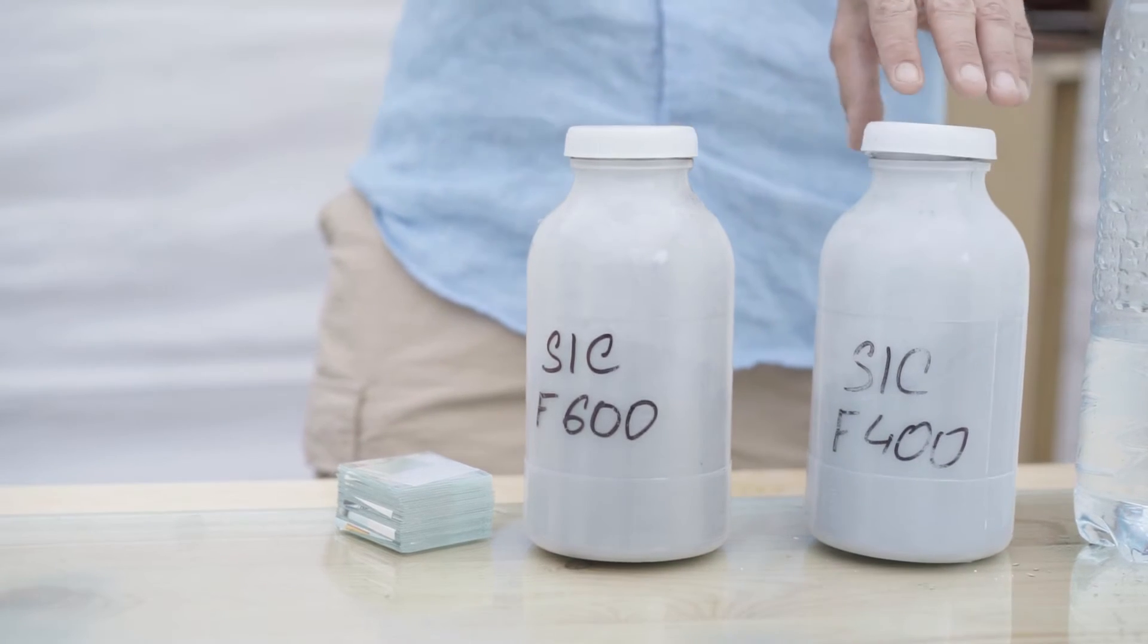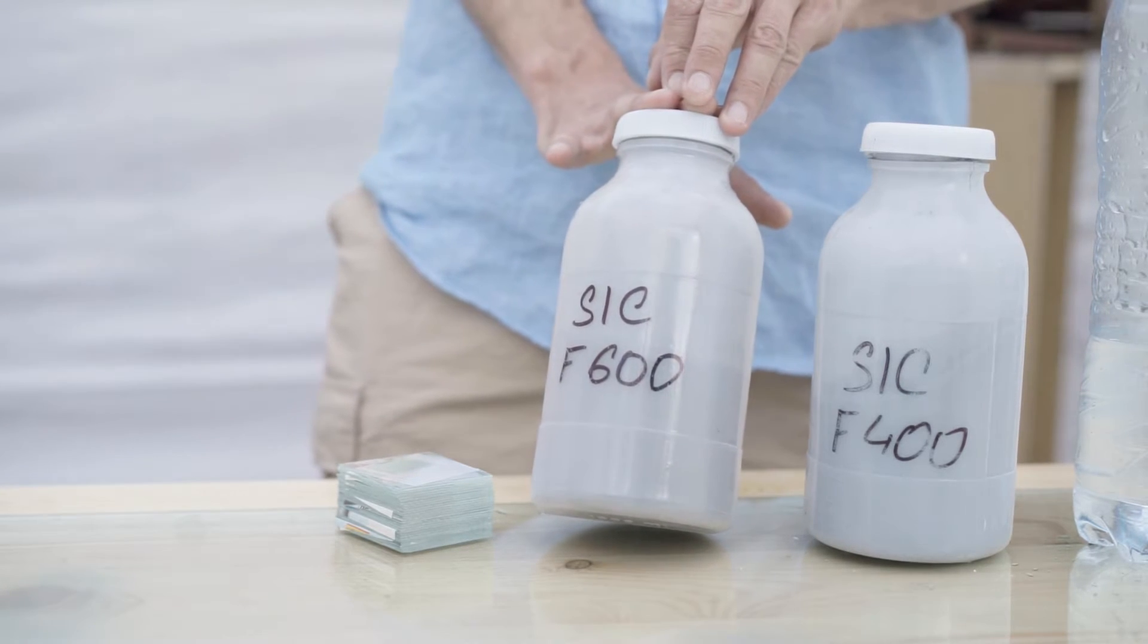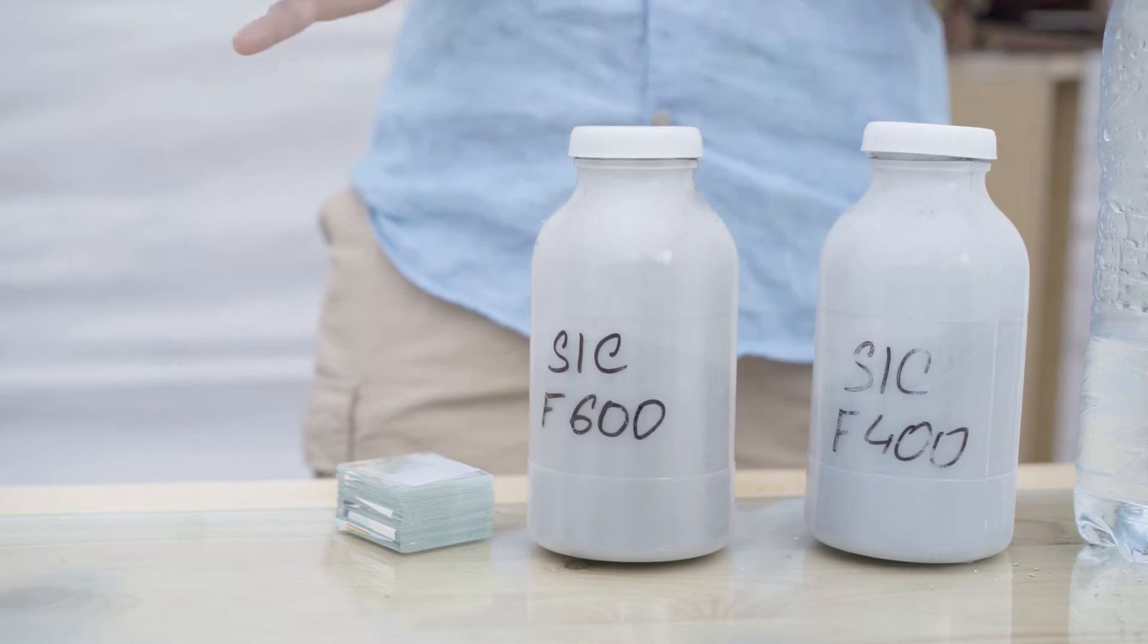You will need a silicon carbide with coarseness of 400 or 600 microns. When you use 400, you will get bigger contrast and lower brightness. If you use 600, you will get lower contrast but higher brightness.